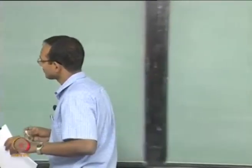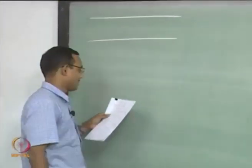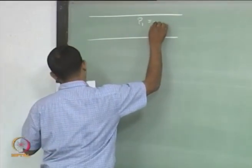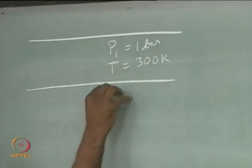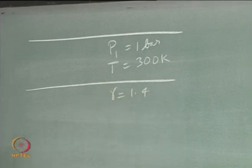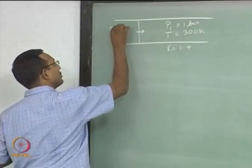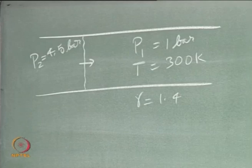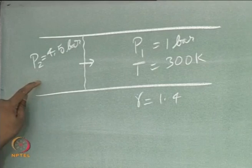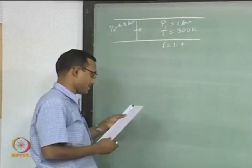The first problem we want to solve: I have a 1D duct with stagnant air at pressure 1 bar, temperature 300 K, and gamma equal to 1.4. There is a shock moving through this duct, and behind the shock the pressure is 4.5 bar. We need to find the shock speed and the speed of the gas behind the shock, both with respect to the duct — the outside reference frame.